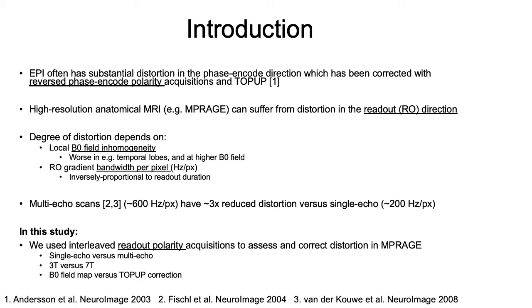In this study we used interleaved readout polarity acquisitions to assess and correct distortion in MPRAGE. We compared single echo versus multi-echo, 3T versus 7T, and B0 field map versus top-up correction.